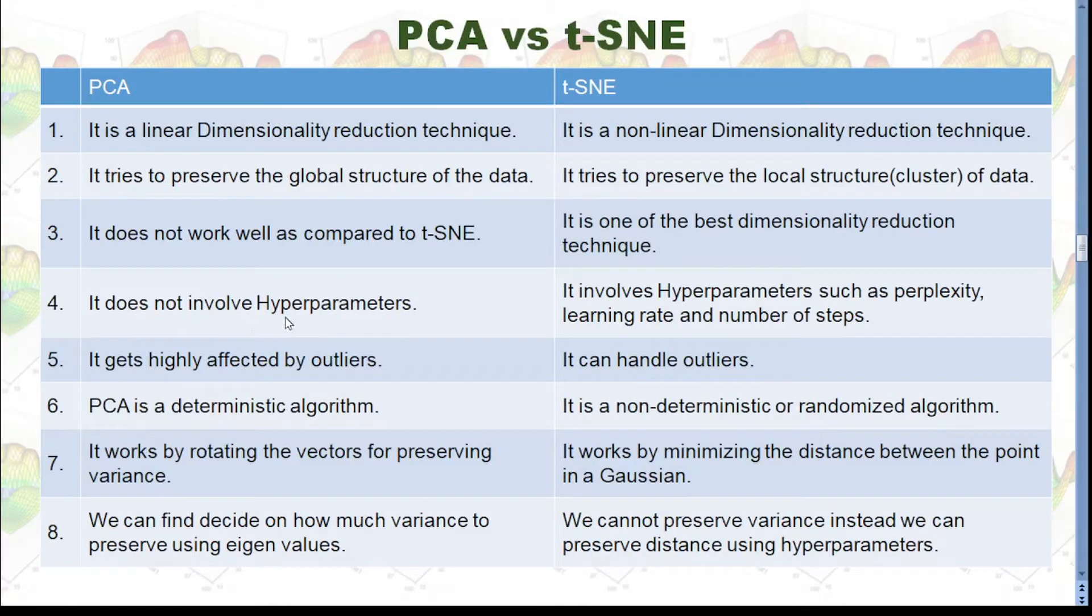PCA does not involve hyperparameters while t-SNE involves hyperparameters such as perplexity, learning rate, and number of steps. We are going to check all those hyperparameters in detail later. And PCA gets highly affected by outliers, while t-SNE can handle outliers. PCA is a deterministic algorithm, while t-SNE is a non-deterministic or randomized algorithm.